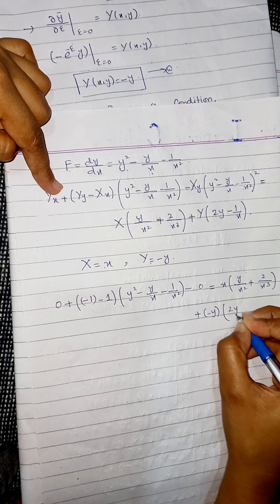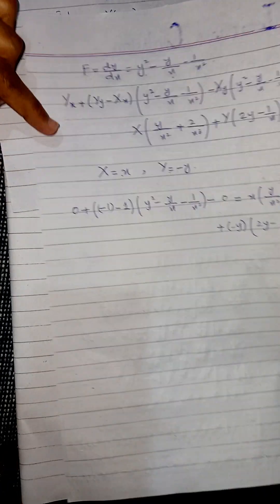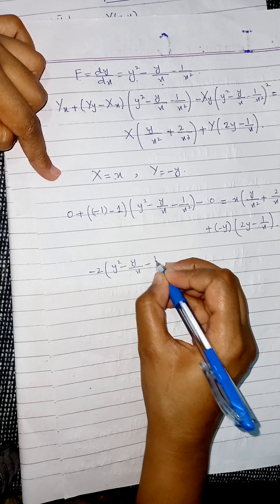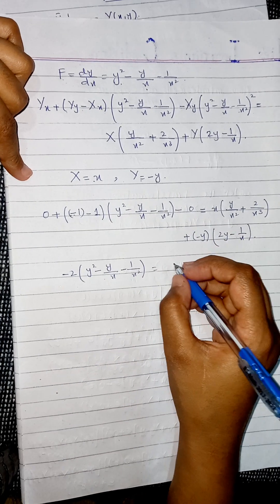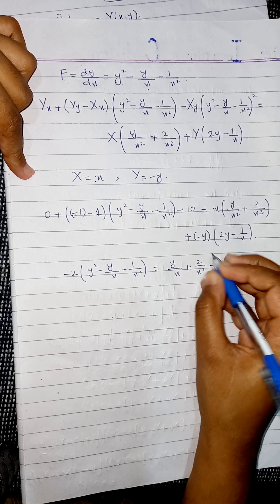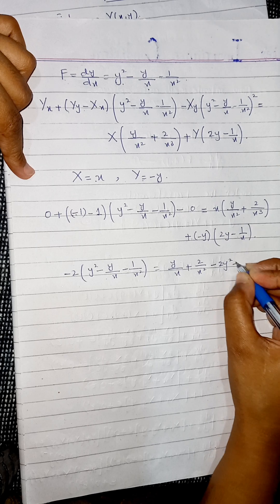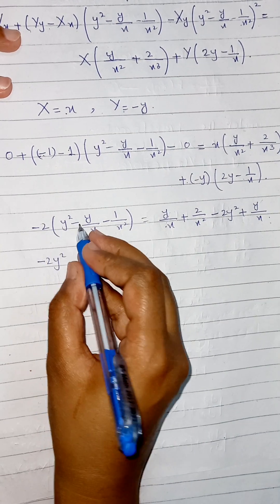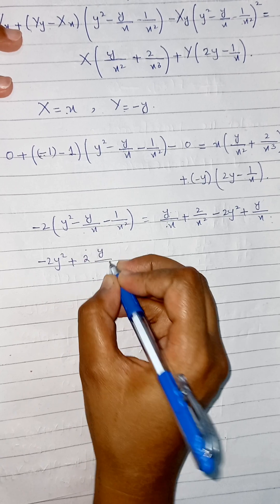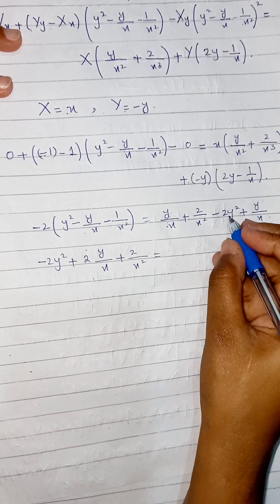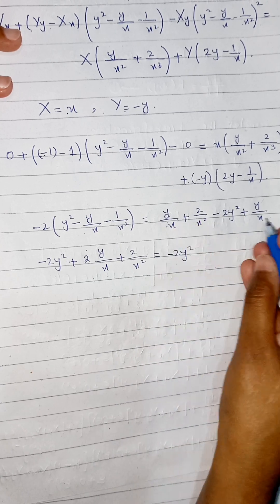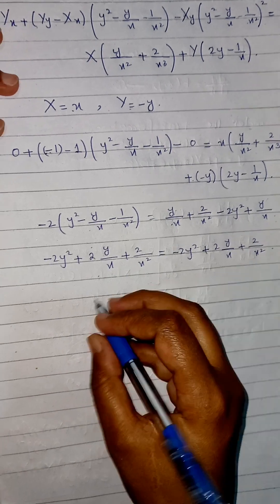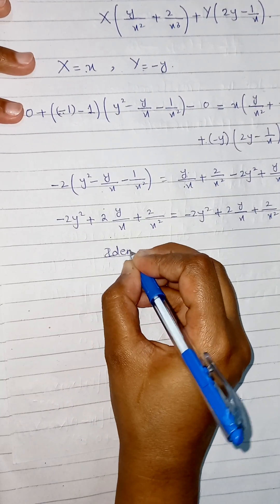Simplifying further, we get minus two times y squared minus y over x minus 1 over x squared, and multiplying through: y over x plus 2 over x squared minus 2y squared plus y over x. Collecting terms gives minus 2y squared plus 2y over x plus 2 over x squared minus 2y squared plus 2y over x plus 2 over x squared, and as you can see this equation is identically satisfied.